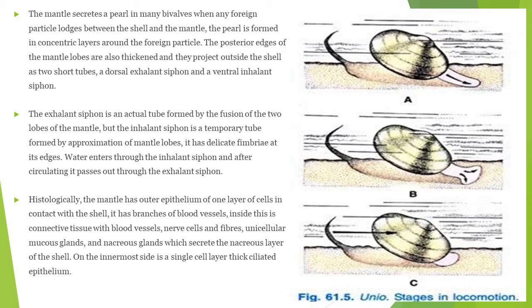Histologically, the mantle has an outer epithelium of one layer of cells in contact with the shell, with branches of blood vessels inside, connected tissue with blood vessels, nerve cells and fibers, unicellular mucous glands and nacreous glands which secrete the nacreous layer of the shell. On the innermost side, it is a single cell layer of thick ciliated epithelium.